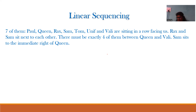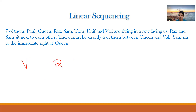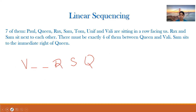A student shares an initial answer: in the second place we have Wali, and in fifth, sixth, and seventh we have Rax, Sam, and Queen. According to the second sub-question, Tom is in the first place. The instructor confirms this is right but explains the arrangement before proceeding to solve it step by step for everyone.